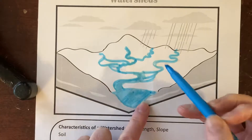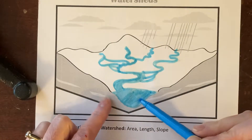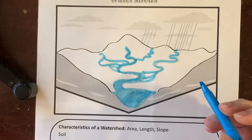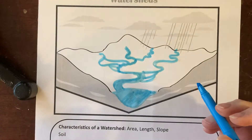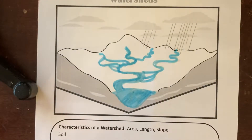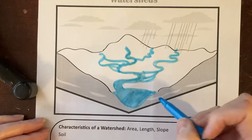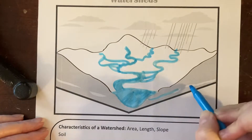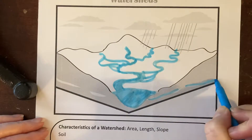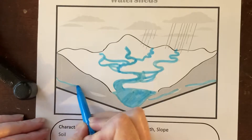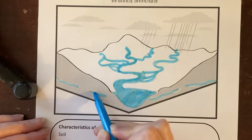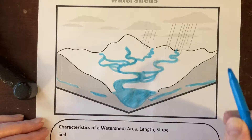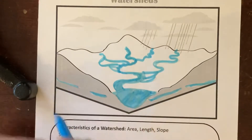A watershed can empty into a lake first, and most lakes have water that comes in and water that comes out. Under here we have groundwater — some water doesn't flow off or run off; it goes underground and soaks into our groundwater or aquifer.